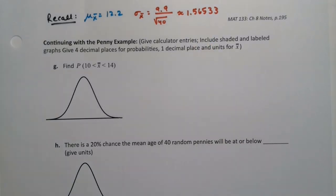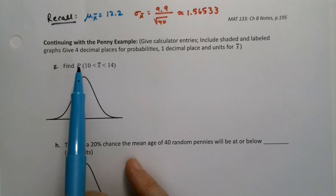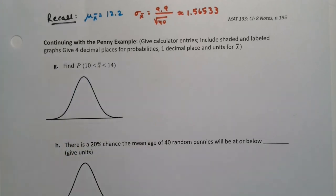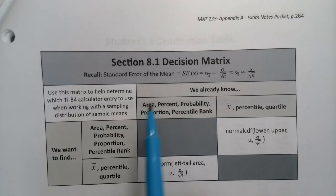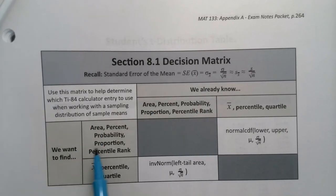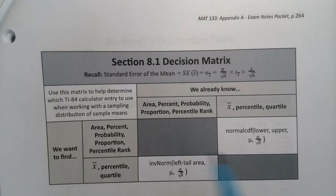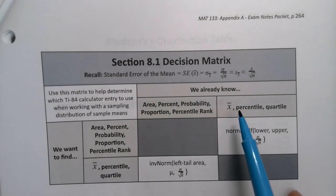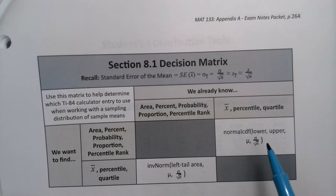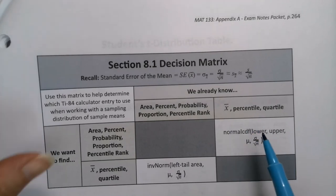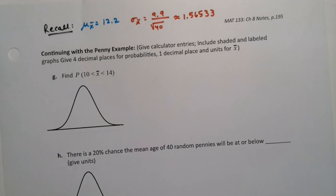Alright, so the first part is they want us to find, well there's a capital P in there with some parentheses. Capital P with parentheses means probability. We learned that in chapter 5. So we want to find probability. We already know x bars, two of them, because they gave us x bar of 10 and x bar of 14. So we want to use normal CDF.